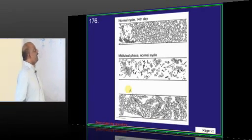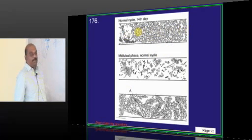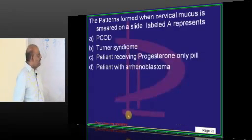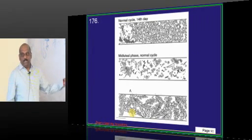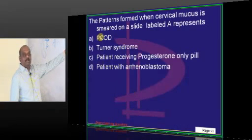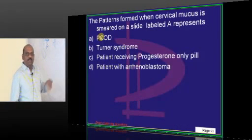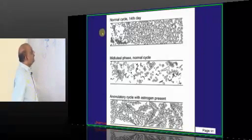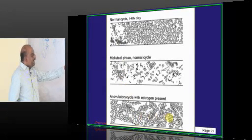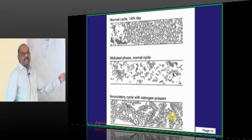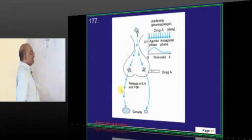If this is a normal cycle 14th day picture, if this is a mid-luteal normal cycle, what does this pattern which is fern-like represent? There is an excess of estrogen in a patient who has got anovulation and that matches with the clinical picture of polycystic ovarian disease. Anovulatory cycle with excess estrogen present is a classical feature of this kind of fern-like pattern.